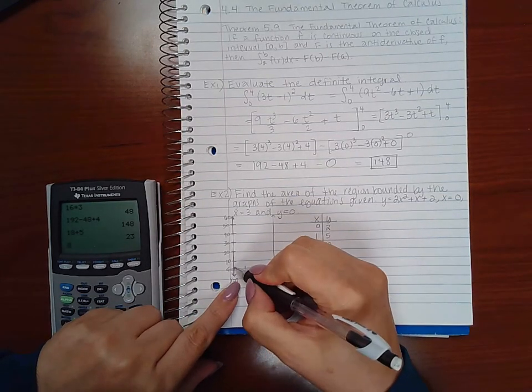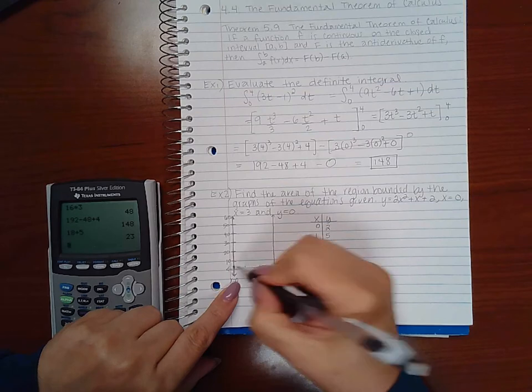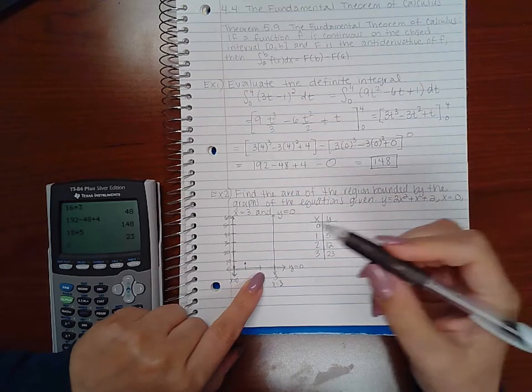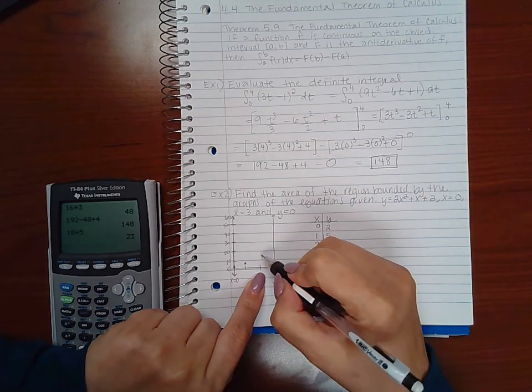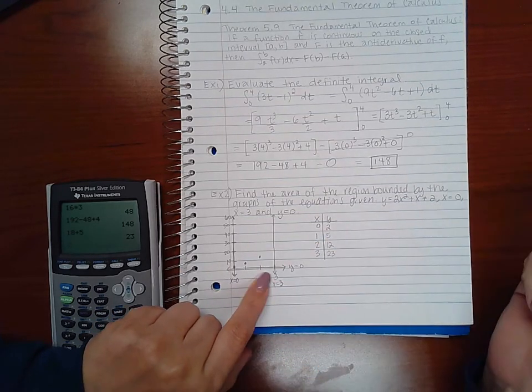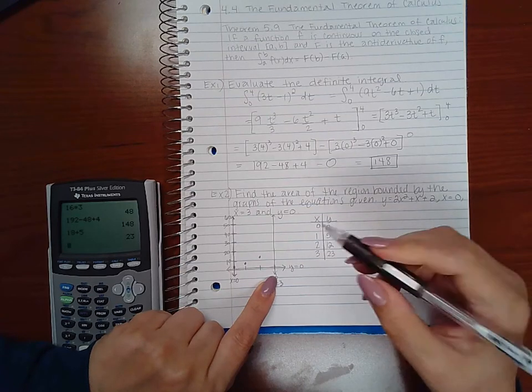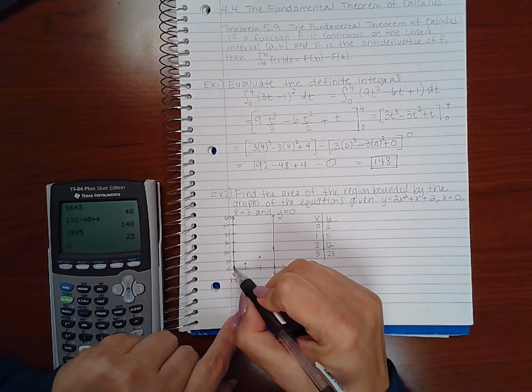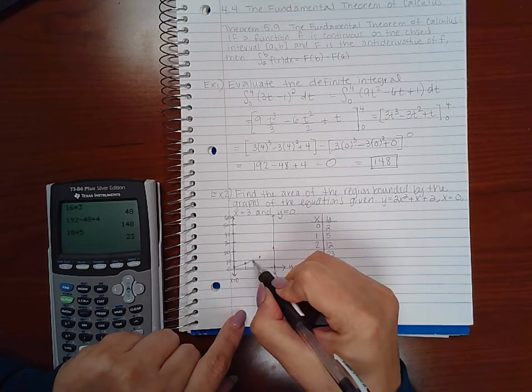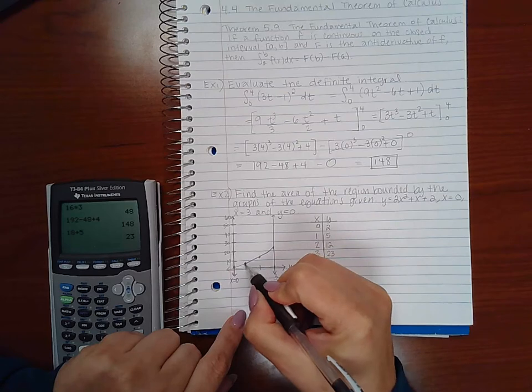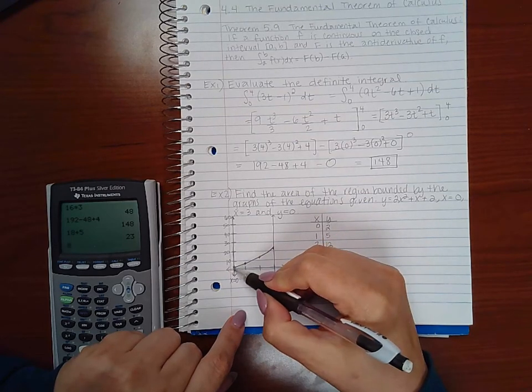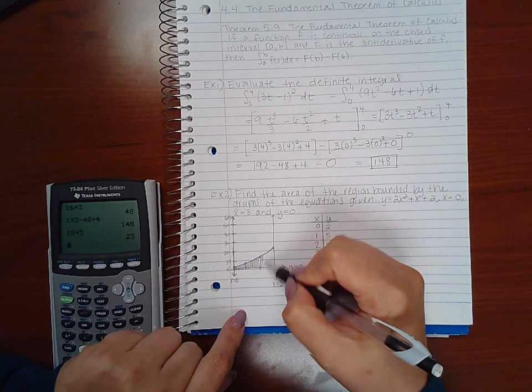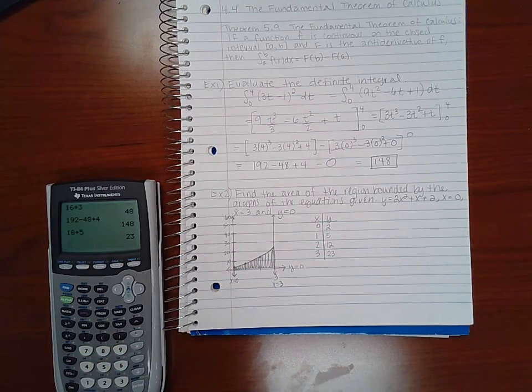So when we plug in 0, we get 2, which is down here somewhere. When we plug in 1, we get 5. When we plug in 2, we get 12. And when we plug in 3, we get 23, which is about there somewhere. So the graph is a quadratic, and it does look like it's opening upward. So this graph here, which means I'm trying to find the area of the region bounded by those three graphs, which is this region here.